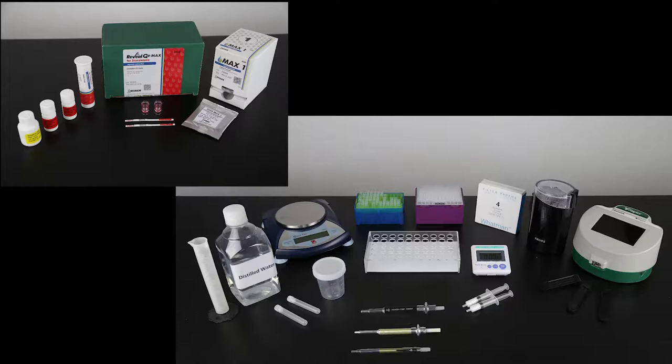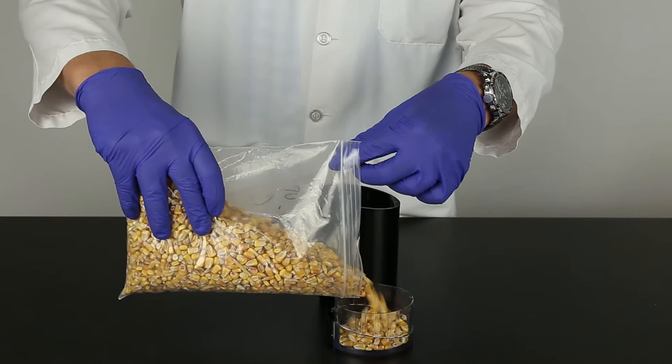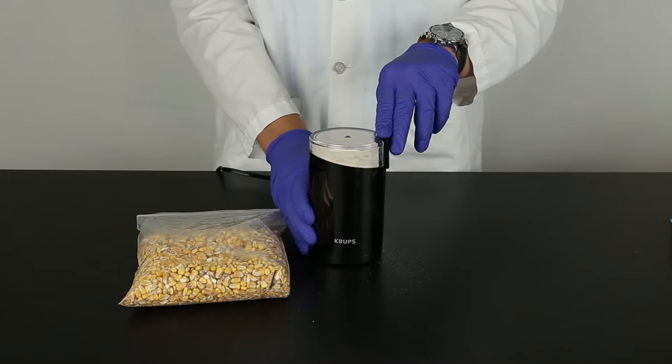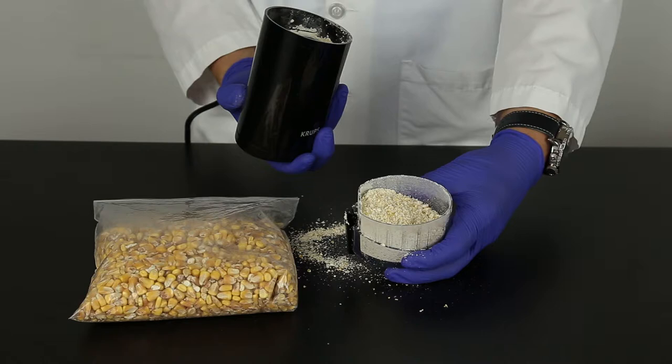To prepare the sample, begin by gathering all the materials required. The sample to be tested should be collected according to accepted sampling techniques. See the FGIS sampling protocol or contact your Neogen representative. Obtain a representative sample and grind so that at least 95% of the ground material passes through a 20 mesh sieve. The particle size should be about the same as espresso. It is best to grind a minimum of 100 grams of your sample.